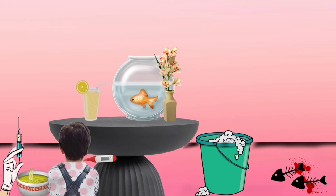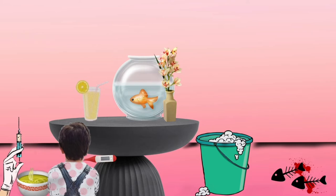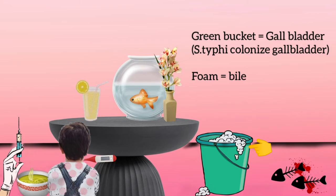Live attenuated vaccines are available for typhoid, represented by the injection. Salmonella typhi grows abundantly in the gallbladder, represented by the green bucket. Inside it, the foam represents bile, which acts as a good culture medium for it.